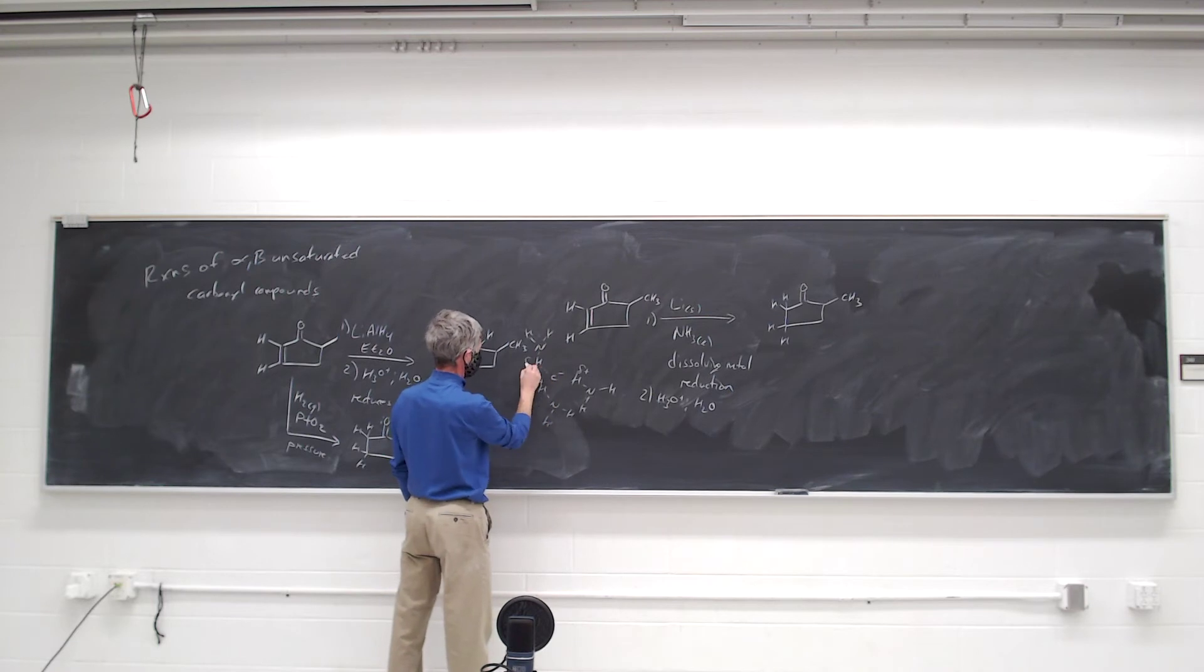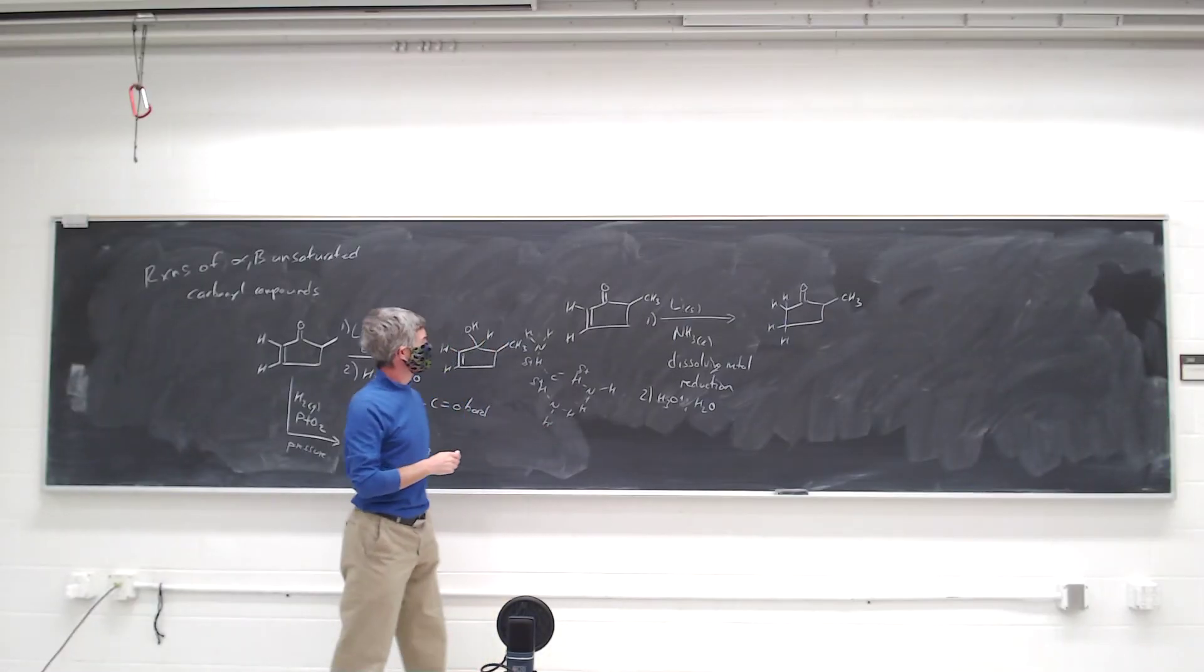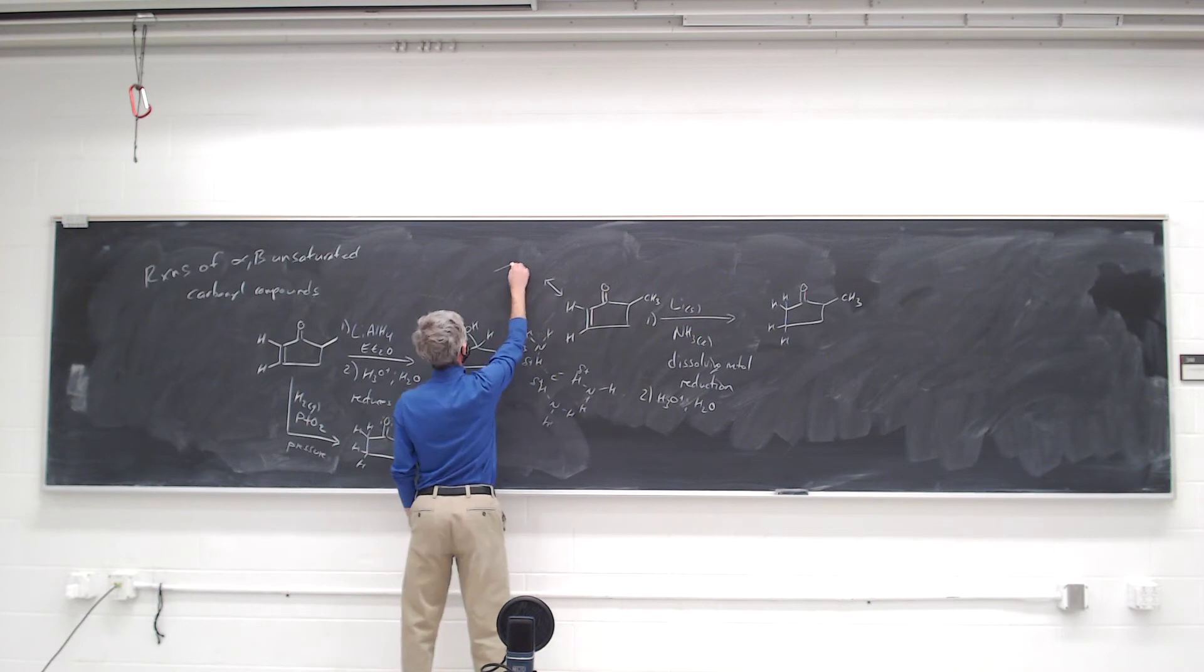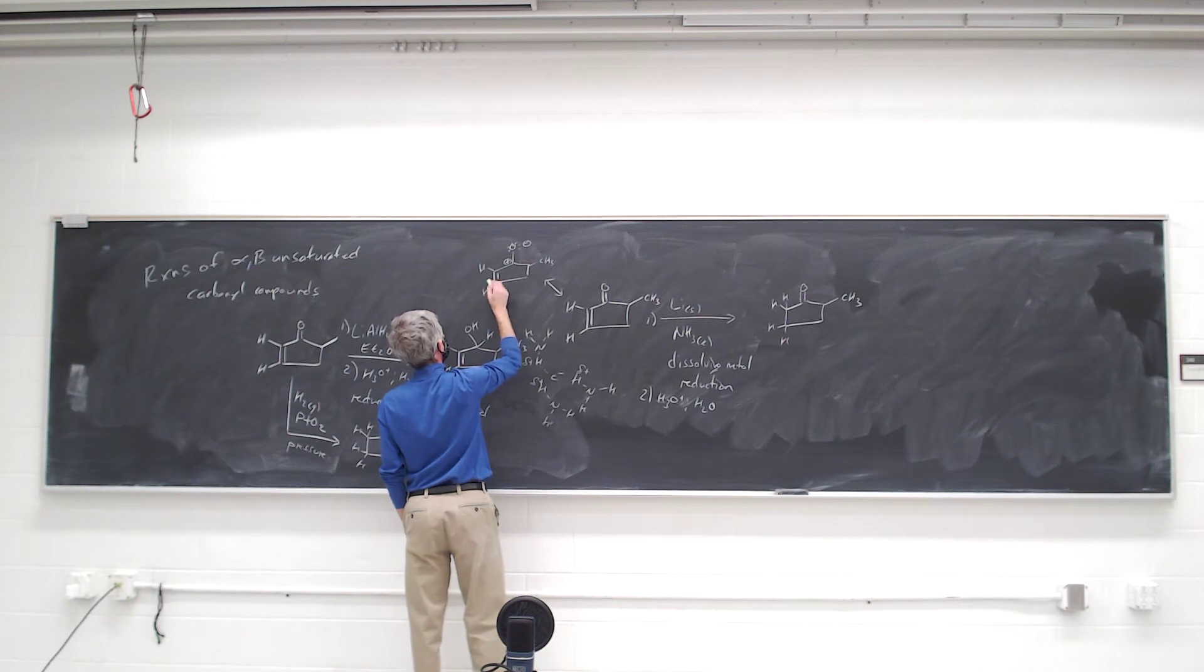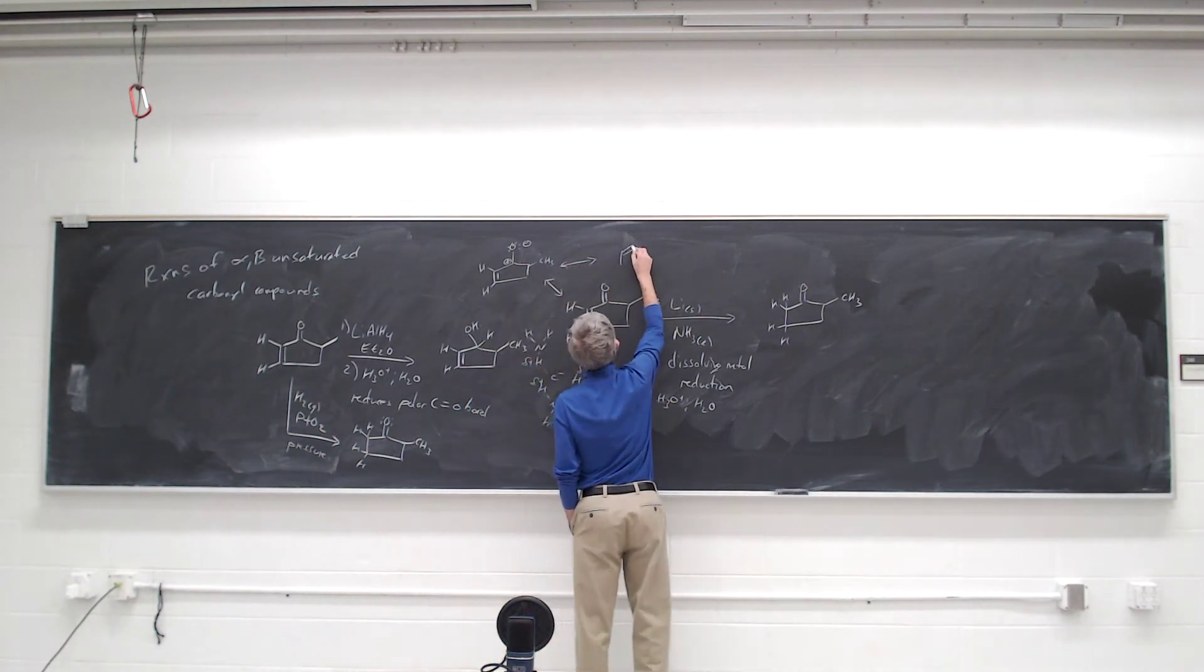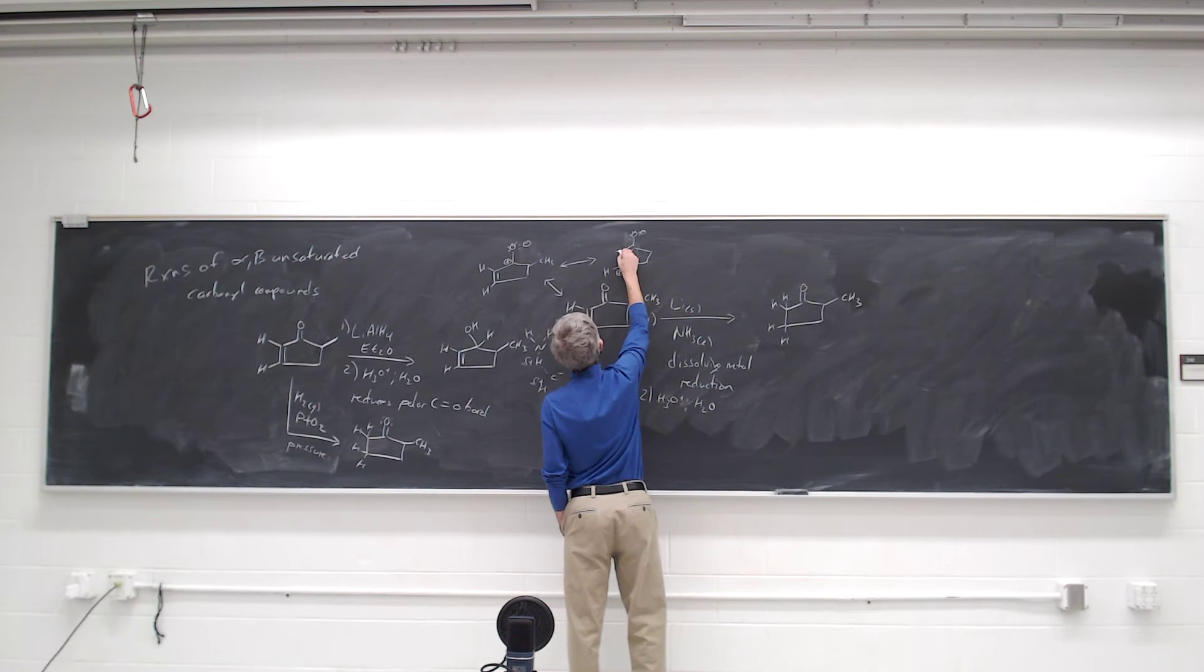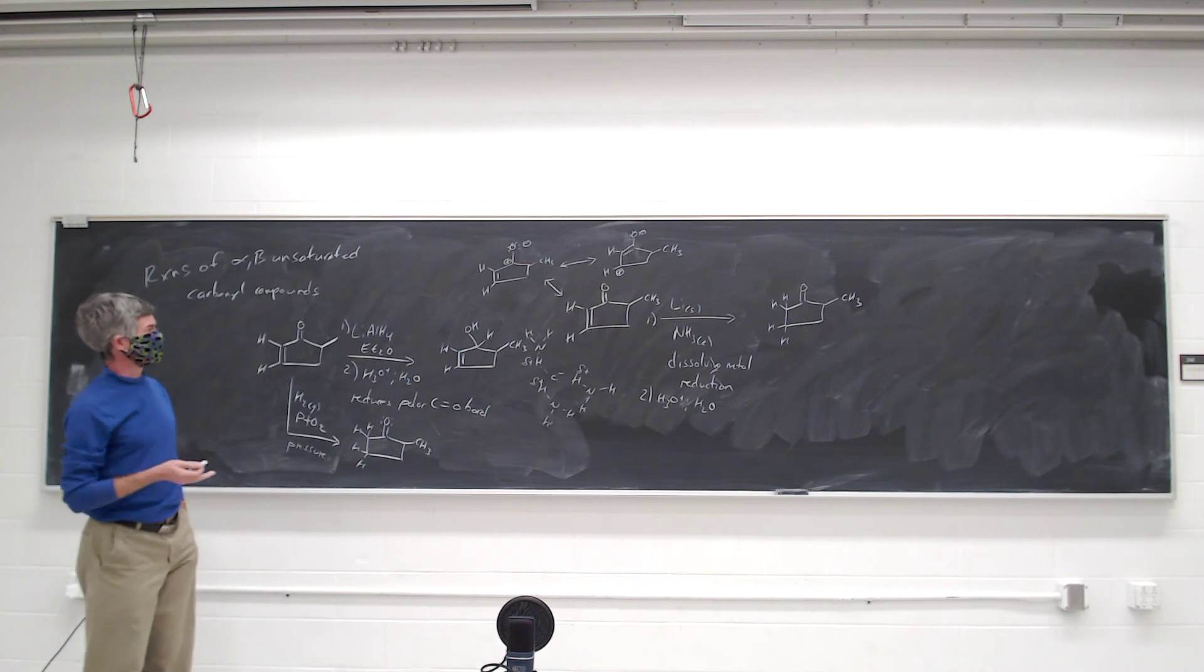And it can donate. Obviously that's pretty reactive. To understand how it donates, we need to write in mind resonant structures for this material. So there's always a resonant structure for the carbonyl group with a positive charge on carbon. But now because we have a pi bond on adjacent to it, there's a third resonant structure that puts a positive charge on this beta carbon.